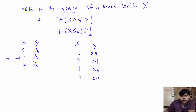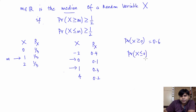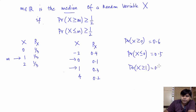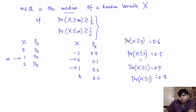Notice that in this case both zero and one are the medians. Why is zero the median? Because the probability that x is greater than or equal to zero is 0.6, and the probability that x is less than or equal to zero is 0.5, and notice that both are greater than or equal to one-half. Similarly, one is also the median because the probability that x is greater than or equal to one is 0.5, and the probability that x is less than or equal to one is 0.8. Since both these properties are satisfied for both numbers 0 and 1, both 0 and 1 are the medians.